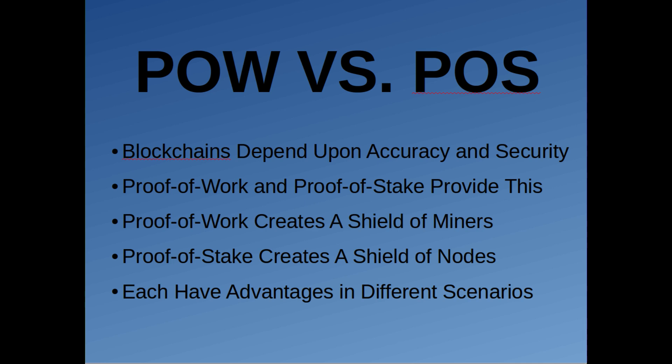So if they lie about what transactions occur, the price of the token — say, if the Bitcoin miners lied about what was going on — the price of Bitcoin would drop to zero. All those people who lied would lose all the money they had invested in their miners. Basically, the way proof of work works is it creates this huge profit incentive to have an honest, secure, and accurate network. With Bitcoin right now, it costs like tens of billions if not hundreds of billions of dollars to get enough computing power to overpower the mining network. So it just really can't be done. Proof of work creates these profit incentives that create the shield of computers called miners, which basically accept and reject transactions on the blockchain.